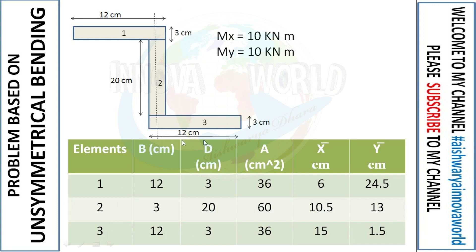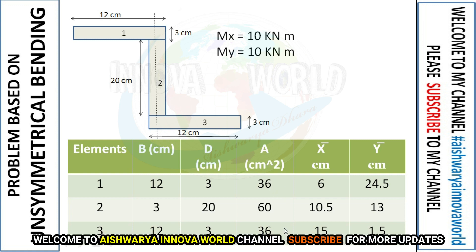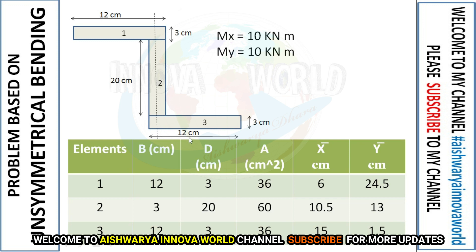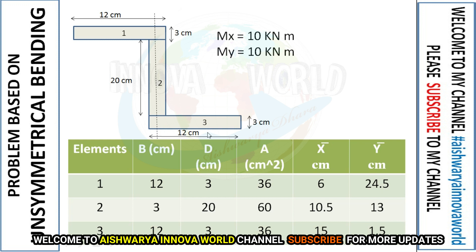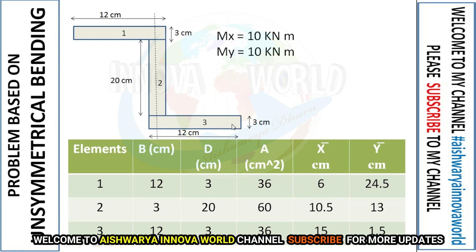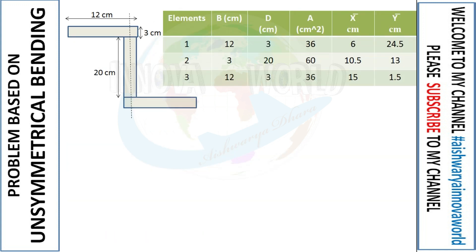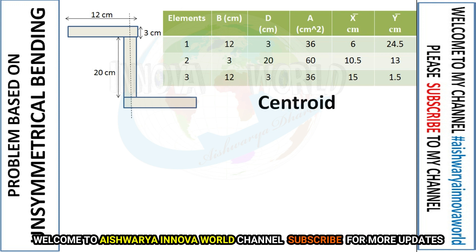For the third element: breadth = 12 cm, depth = 3 cm, area = 36 cm². The x̄ from the reference point is 9 + 6 = 15 cm. The ȳ from the reference is half of 3, which is 1.5 cm.